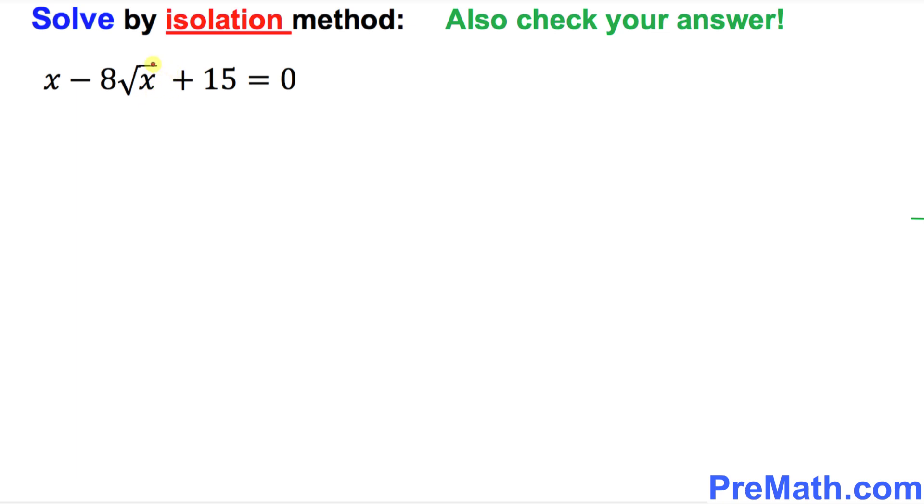The very first step is we want to make sure that wherever you see this radical part, this one over here, this one I'm going to isolate and I'm going to put it on the other side. So once you move that one on the other side, we are left with x plus 15 on the left hand side equals to 8 times square root of x.